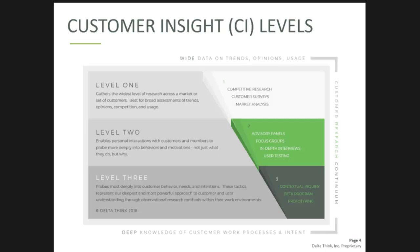Many of you may have seen this slide before — we use it a lot at DeltaThink. We like to break that market research and customer insight down into different levels. What is it that you're trying to achieve? Do you want to get that level one customer insight — understand on a broad level from a large group of people what are they doing, what products are they using, what are their opinions? Or do you want to look at your competitors and see what's out there in the landscape — how are they messaging, who are they targeting, what are they featuring?